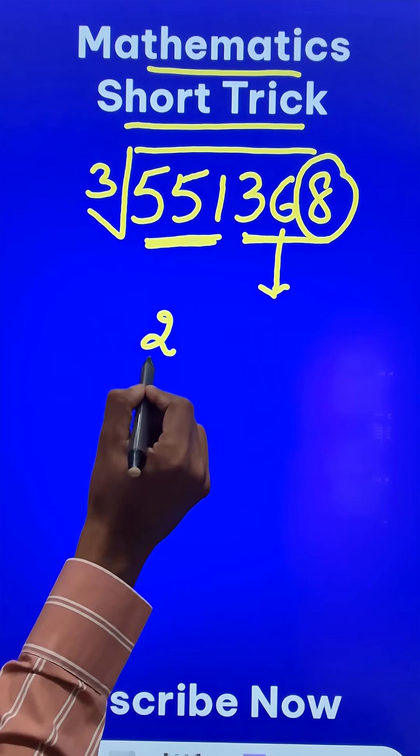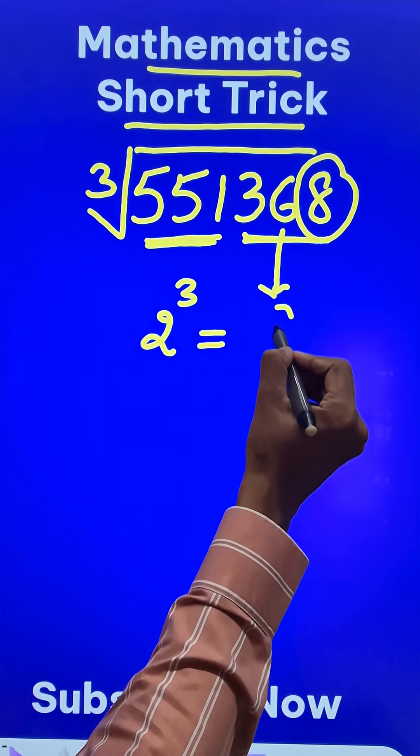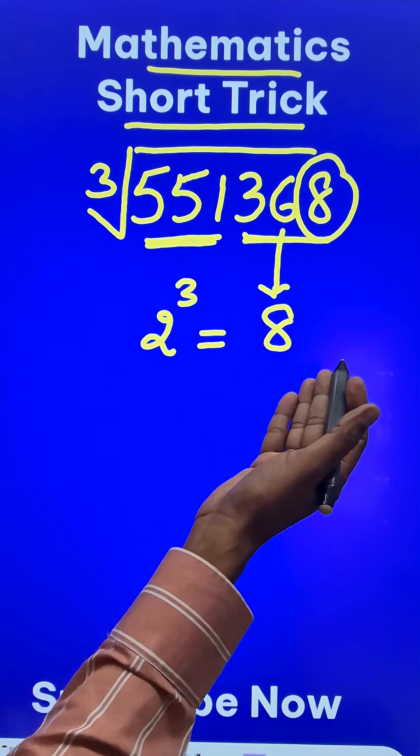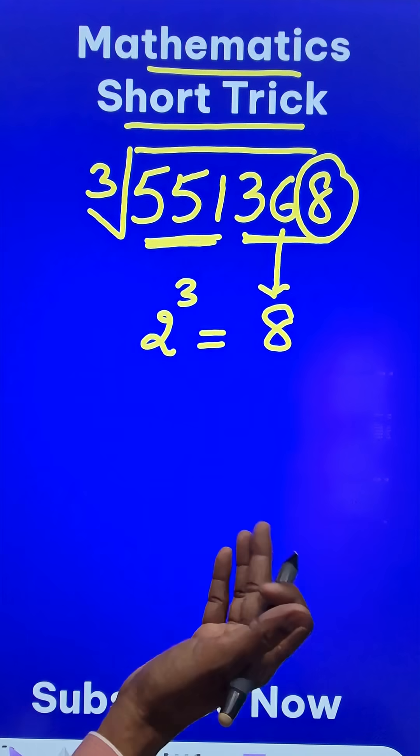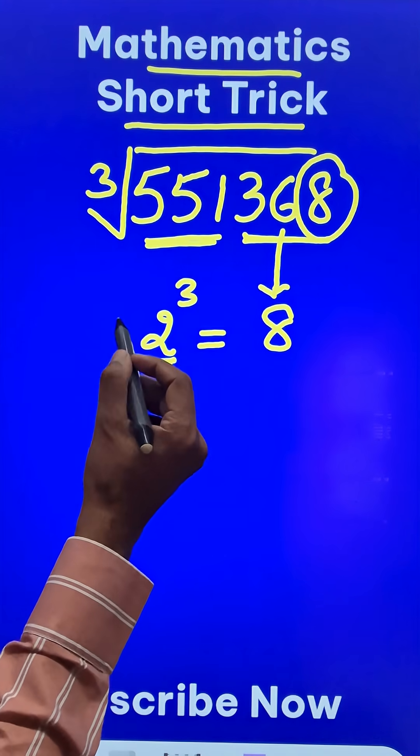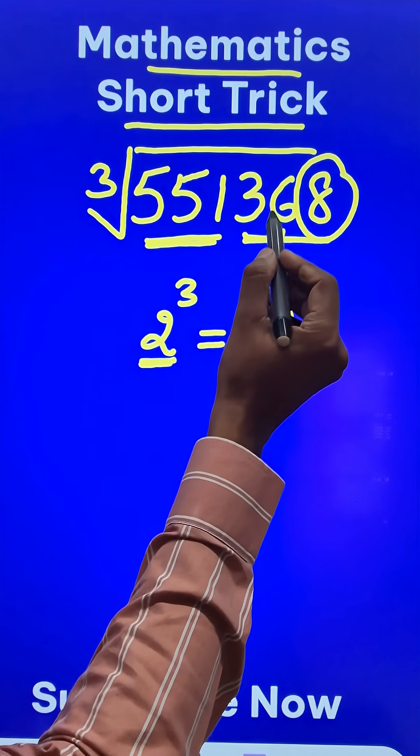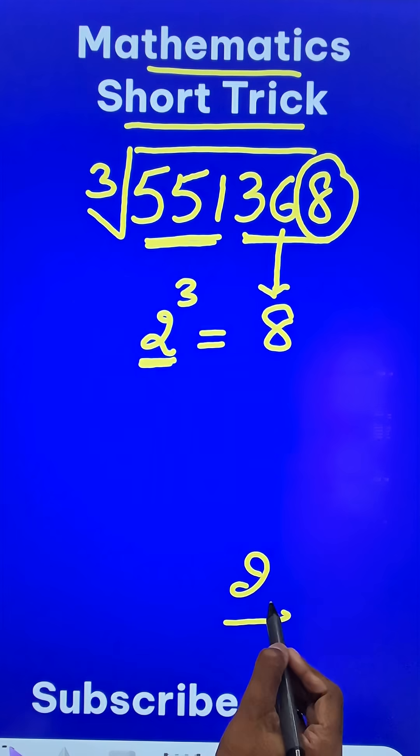Now there is only one single digit number 2 whose cube is ending in 8. So 3 cube ends in 7, 4 cube ends in 4, and likewise 9 cube ends in 9. So only 2, its cube ends in 8, and so the answer will have 2 at the unit place.